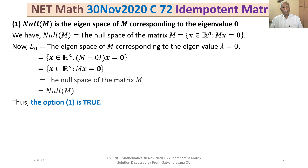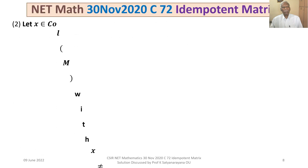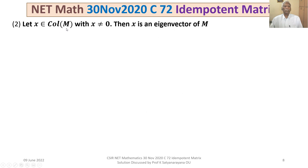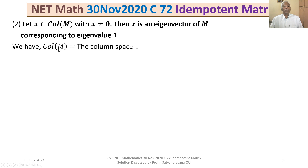Let us now examine Option 2. Let x belong to the column space of M, with x not the zero vector. The column space of M is by definition the set of all vectors Mx for x ∈ ℝⁿ. We need to check whether such x is an eigenvector of M corresponding to eigenvalue 1.